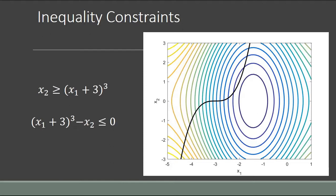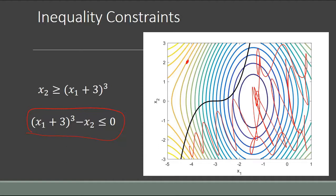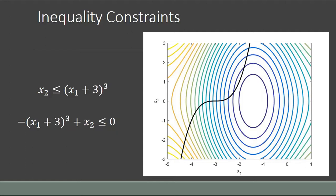If we take that same exact problem and turn the equality constraint into an inequality constraint, this is basically saying that x2 has to be greater than or equal to that line. By making this an inequality constraint, we're ruling out part of the space, but the solver does have more freedom of solution — anything above that line is going to be feasible. You can see that this is going to be what's called an active constraint, and when we solve that problem we find the exact same solution as the equality constraint case.